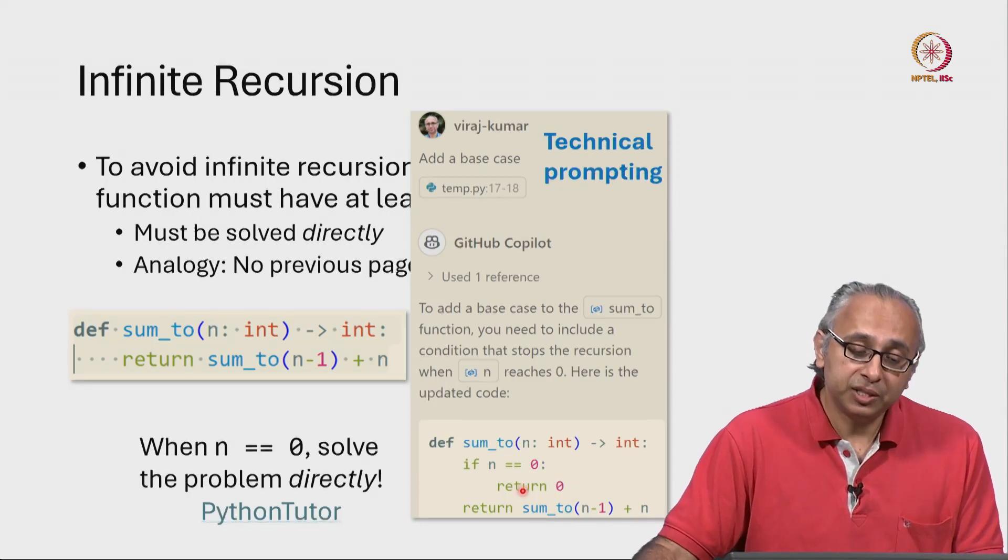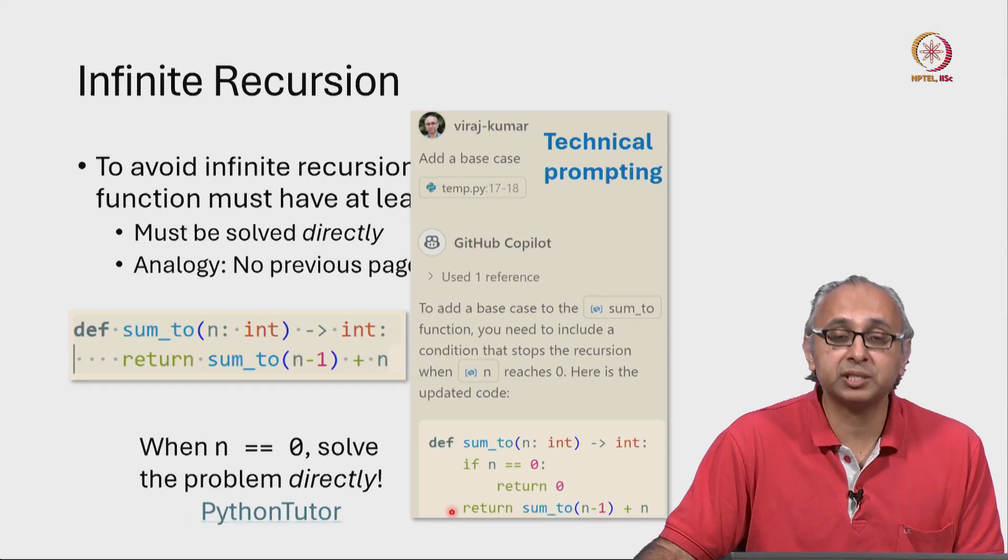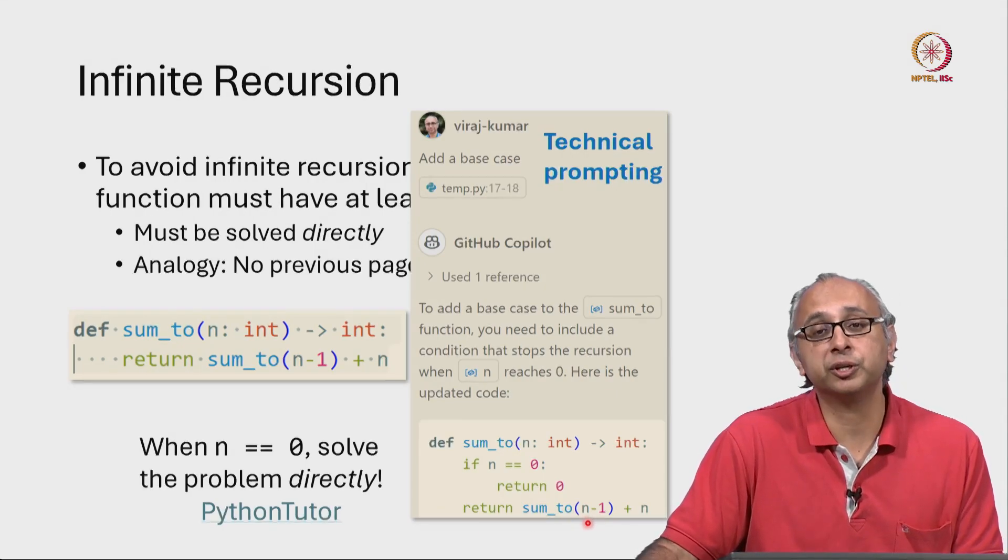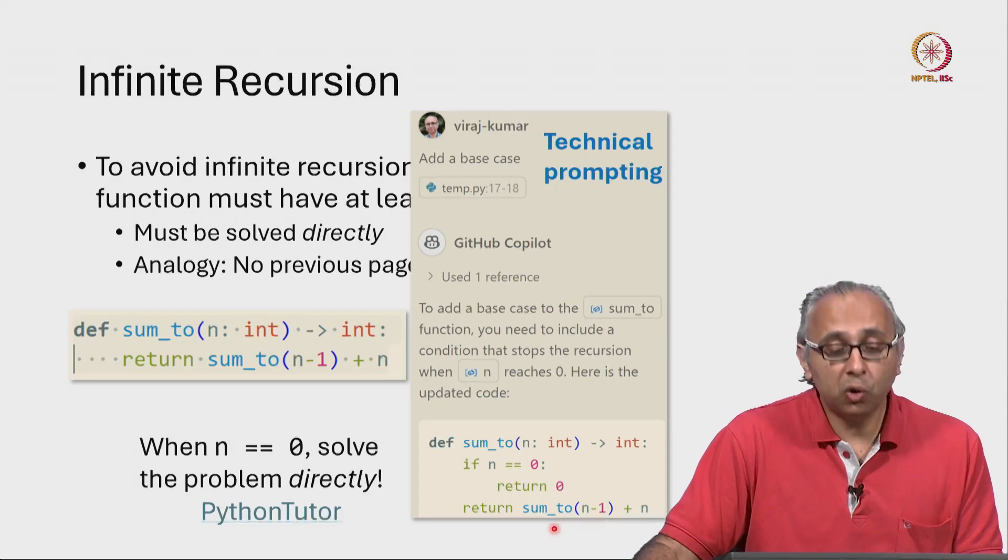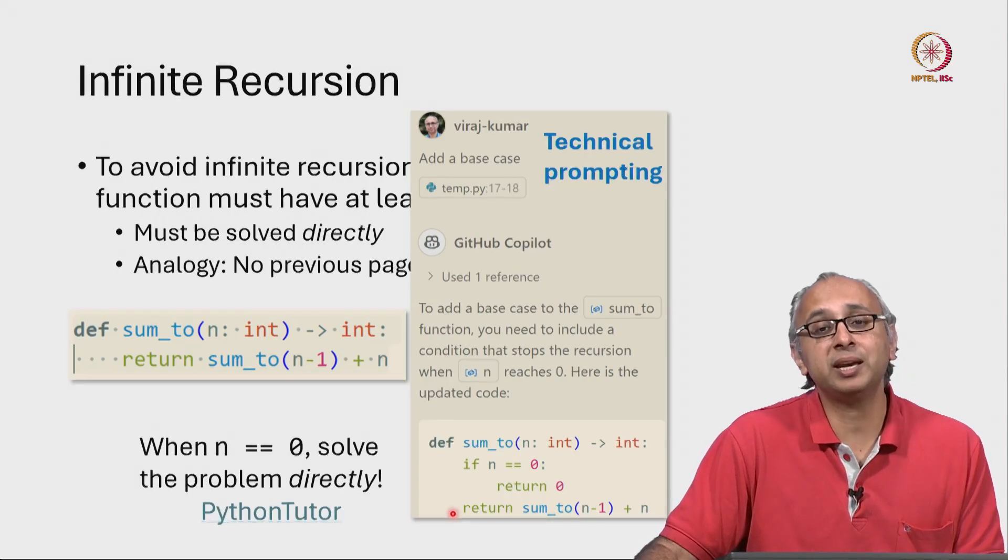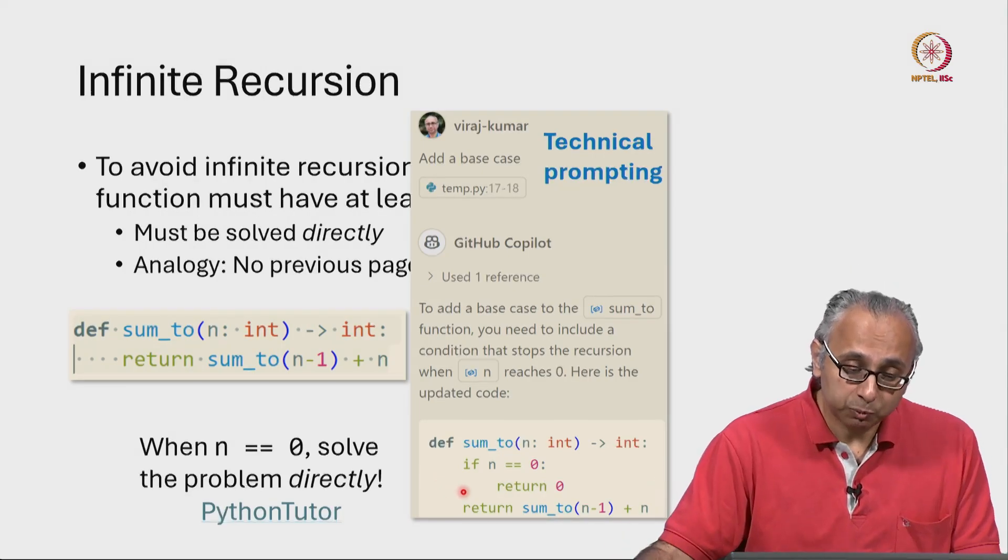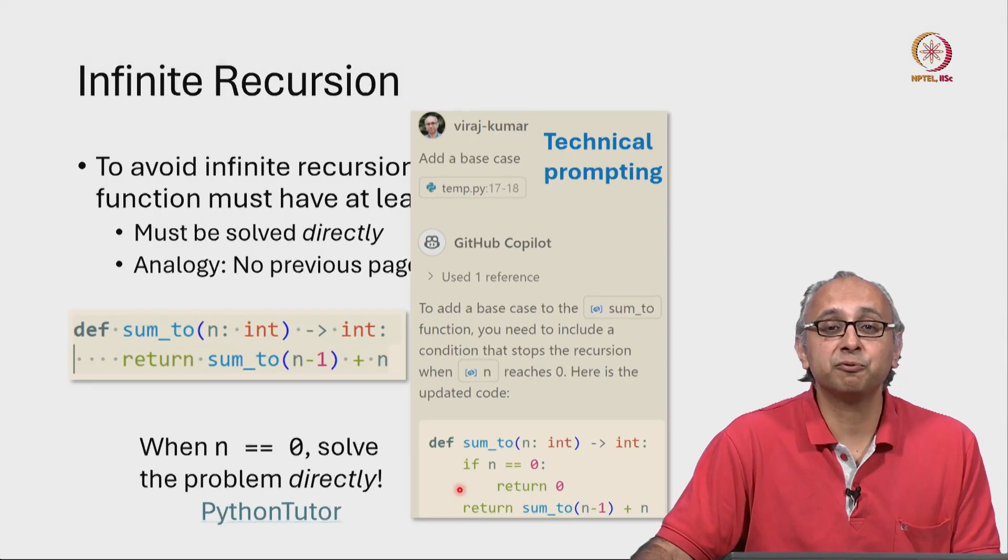And that means the only way we can come to this last line where we are calling the function recursively, the only way we can come to this line is when n is not 0. So in the base case, when n is 0, we directly compute the answer. Notice that we write the base case first.